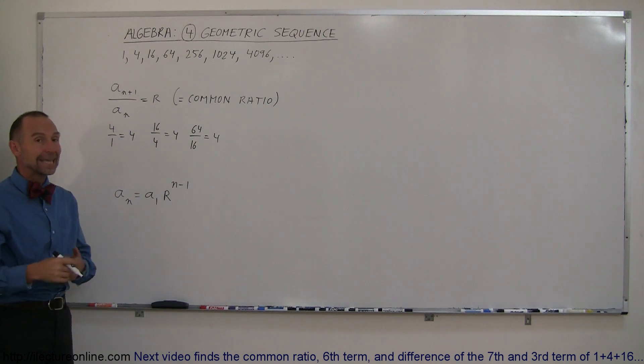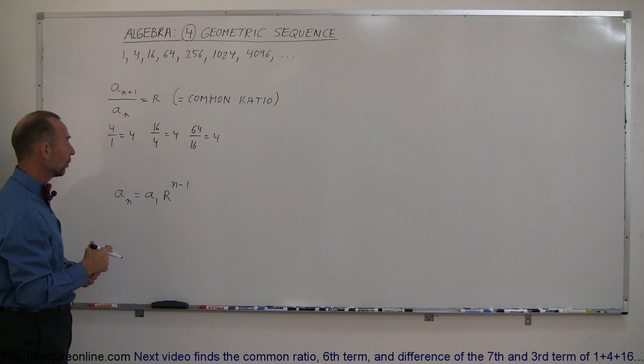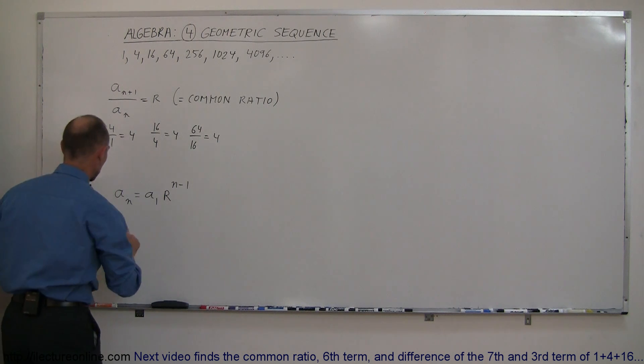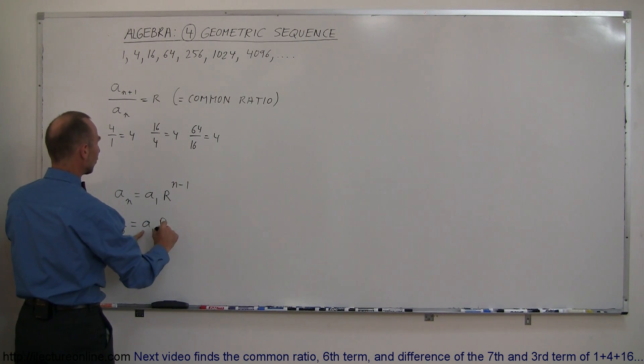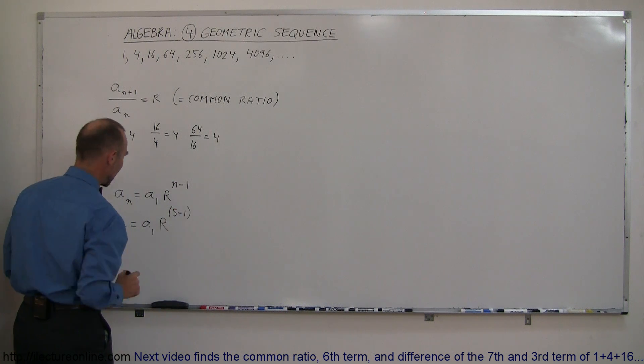Now if you want to find the nth number in a sequence, you use this equation right here. So let's say we want to find the fifth number of the sequence. That's equal to the first number of the sequence times the common ratio raised to the n minus 1 power.